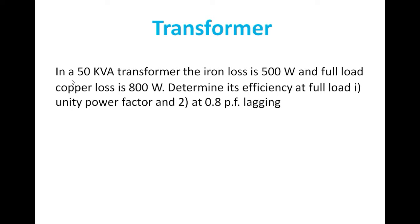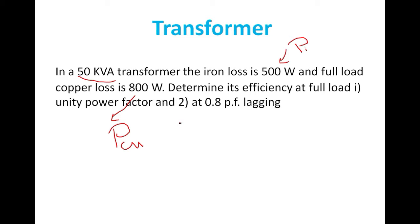The problem is given as: 50 kVA transformer, the iron loss (P_i) is 500 watt, and the full load copper loss (P_cu) is 800 watt.